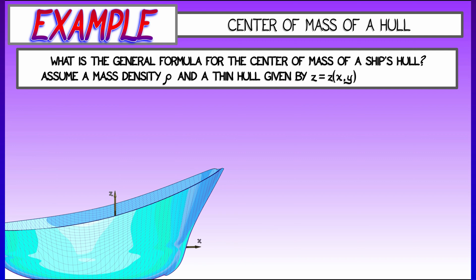Let's assume that that ship hull has mass density rho, and it's expressed as the graph of a surface. Let's say z is a function of x and y, for x and y, some region in the plane.